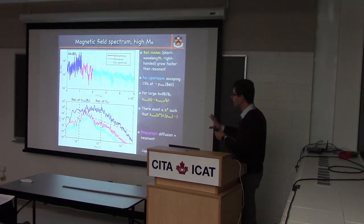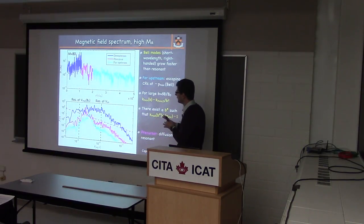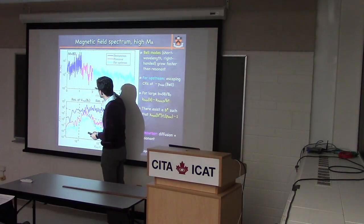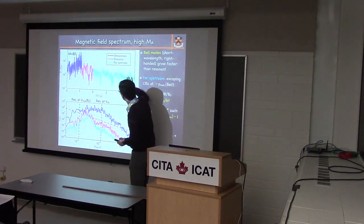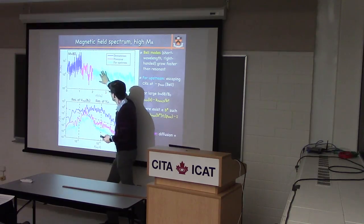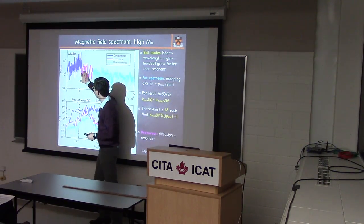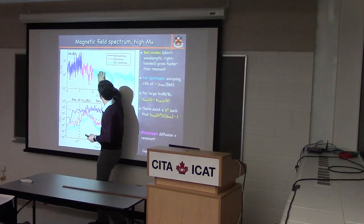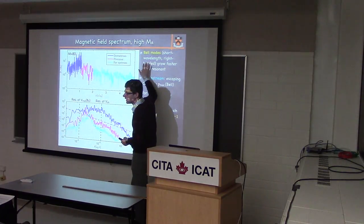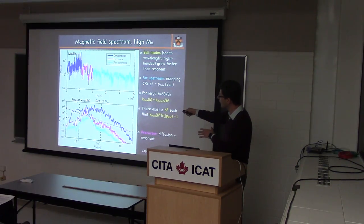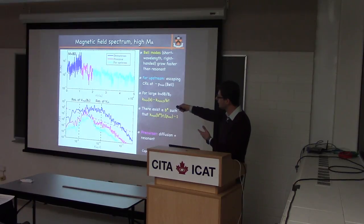We can also evolve long enough to see a transition between diffusion and escape. The magnetic field structure through the shock shows a downstream region, a far upstream, and an interesting middle region where particles are diffusing. Here particles are escaping towards the upstream; here they're diffusing around the shock; here they're trapped downstream. This diffusion region expands over time, and at the front edge the highest-energy particles are leaking into the upstream and seeding more turbulence.